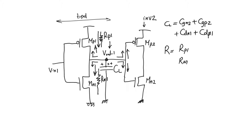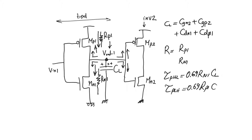To find the delay at any output node, we calculate two drain capacitances and the resistance from the current stage, plus two gate capacitances from the next stage. From this, TP_HL = 0.69 * R_N1 * C_L and TP_LH = 0.69 * R_P1 * C_L. A high-to-low transition is driven by the NMOS path to ground; a low-to-high transition is driven by the PMOS path to supply.